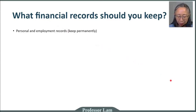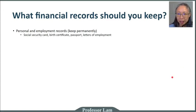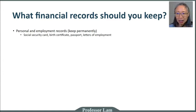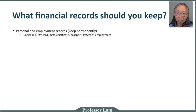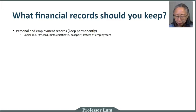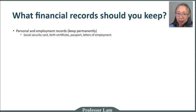The first type of records are personal records. These include your passport, your social security card, your birth certificate, and your employment letter. These are things you need to get a job — when you interview, the first thing they ask is a form of identification, including your social security card, your driver's license, and sometimes a passport. These are paperwork records and you should have them in a safe place that you can get to at a moment's notice.